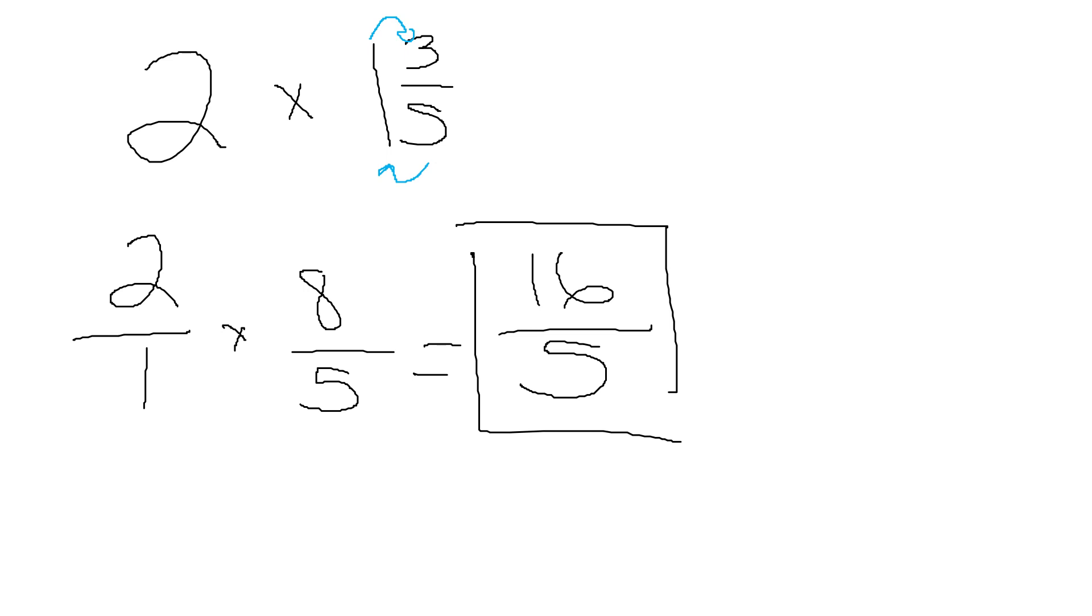So let's work one of these. Let's do two times one and three fifths. Okay, if step. If we have a whole number, put it over one. If we have a mixed number, convert it. Five times one is five. Five plus three is eight. Keep your denominator. I do not need a common denominator. I simply do top times top over bottom times bottom. And if I can, I reduce. If not, I just leave it like that.